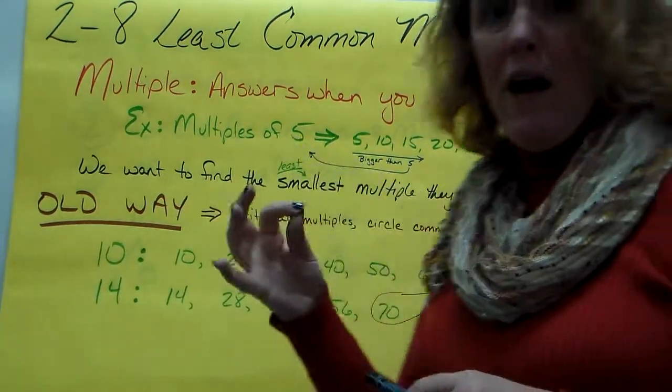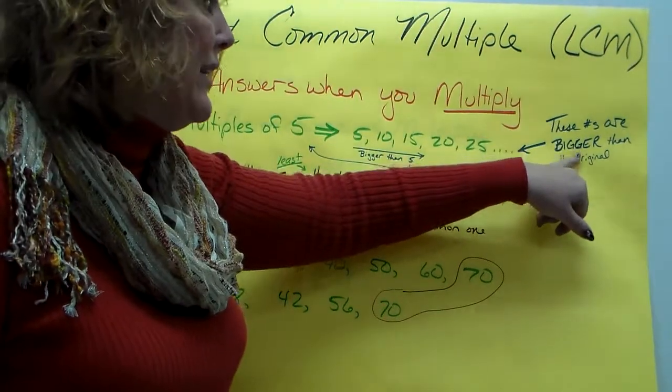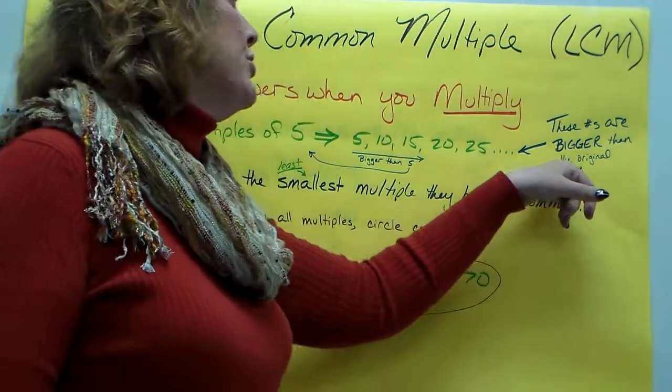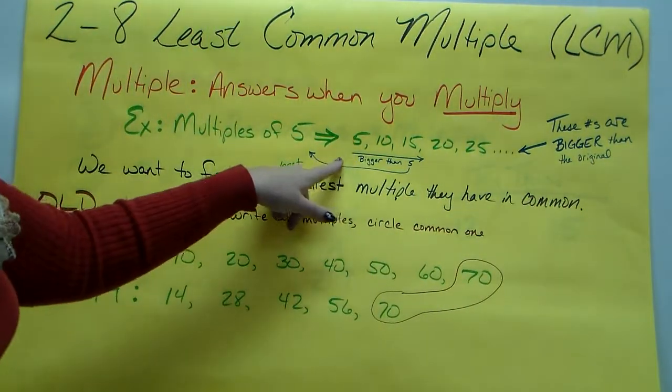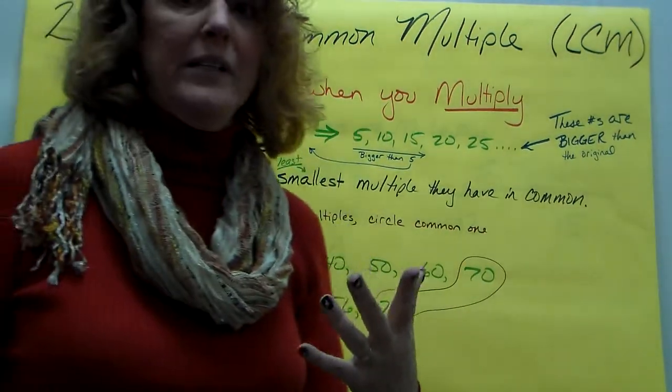For example, multiples of 5 are 5, 10, 15, 20, that kind of thing. These are numbers that are bigger than the original number, or the same as, but bigger than the original number that you started with. So these are all 5 or bigger here. That's what a multiple is.